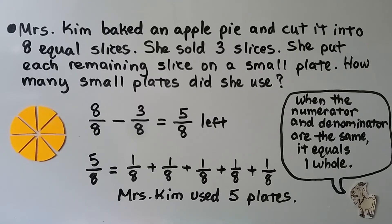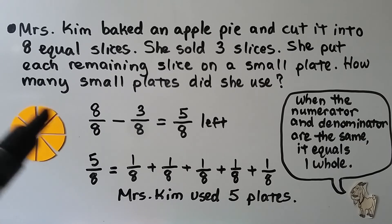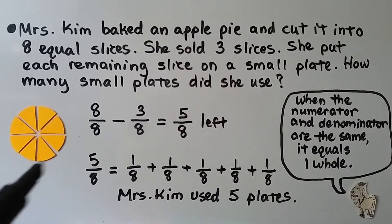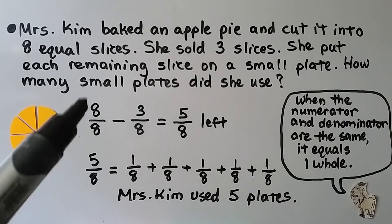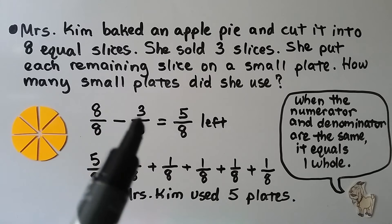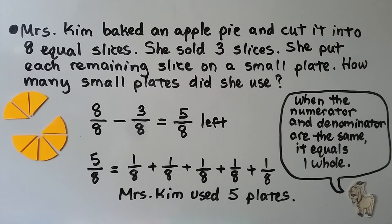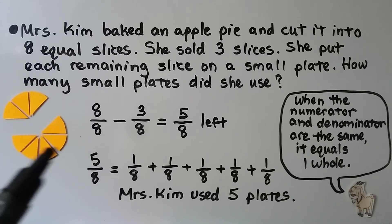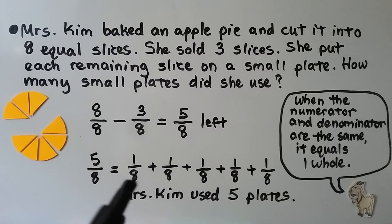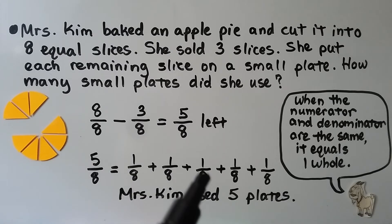Mrs. Kim baked an apple pie and cut it into 8 equal slices. She sold 3 slices and put each remaining slice on a small plate. How many small plates did she use? We have a pie cut into 8 equal slices — that's 8 eighths, which equals one whole. She sold 3 slices, so we take away 3 eighths. We have 5 eighths left — 5 slices. We can write it as a sum of unit fractions: 1 eighth plus 1 eighth plus 1 eighth plus 1 eighth plus 1 eighth. That is 5 plates that Mrs. Kim used.